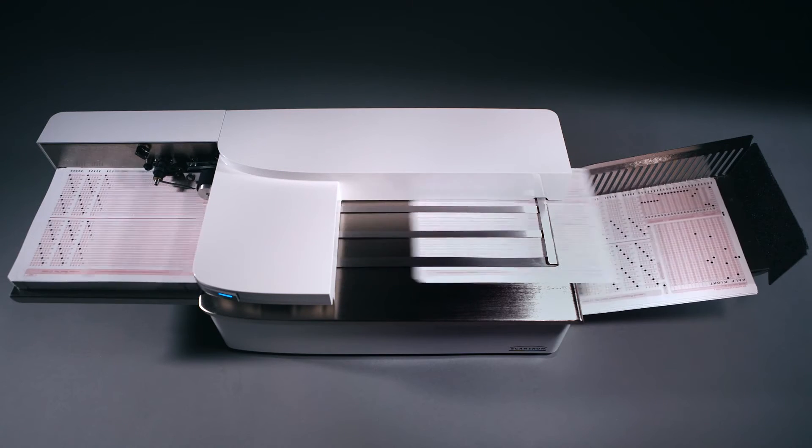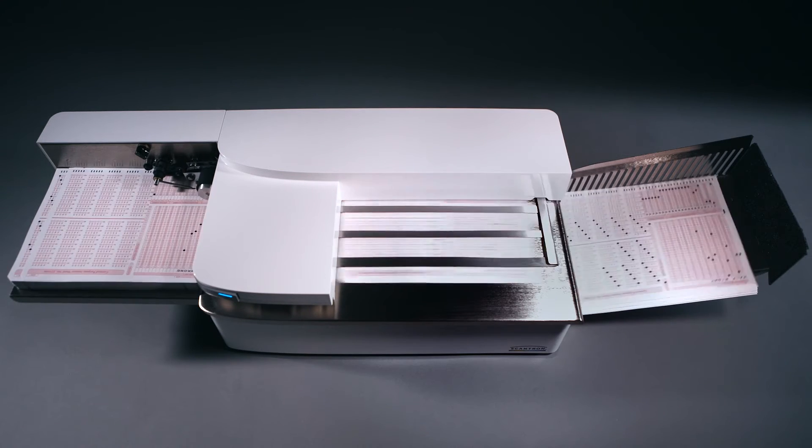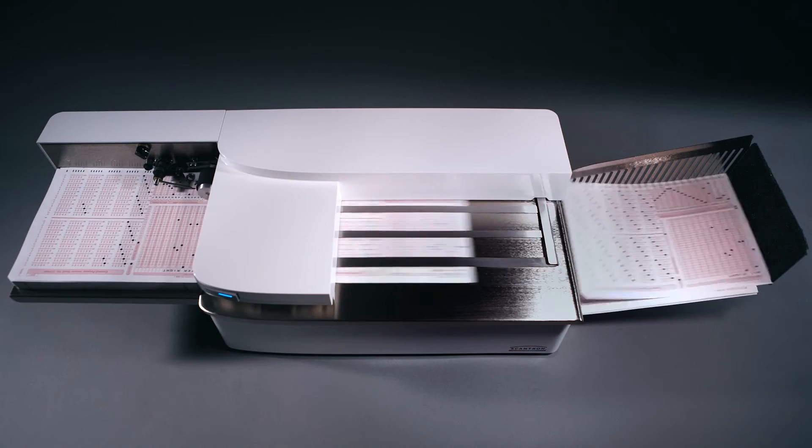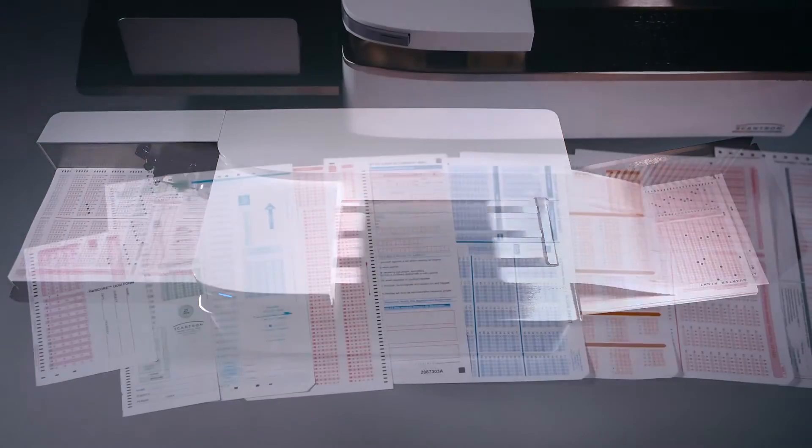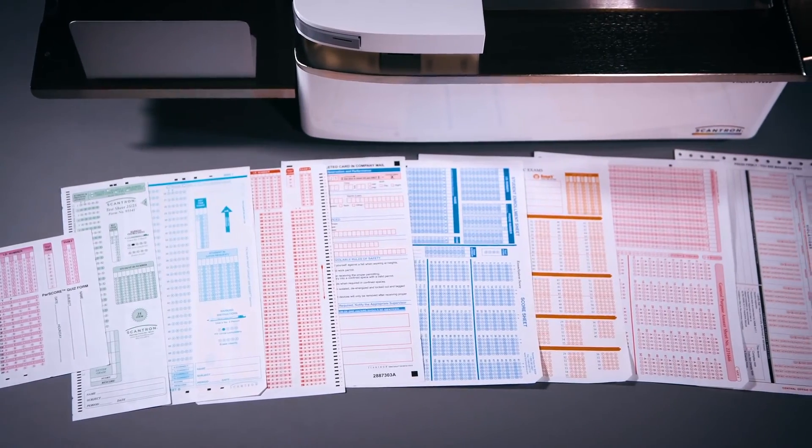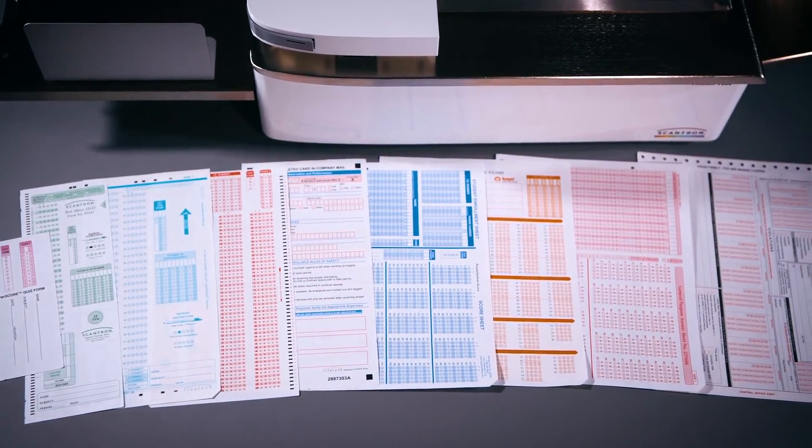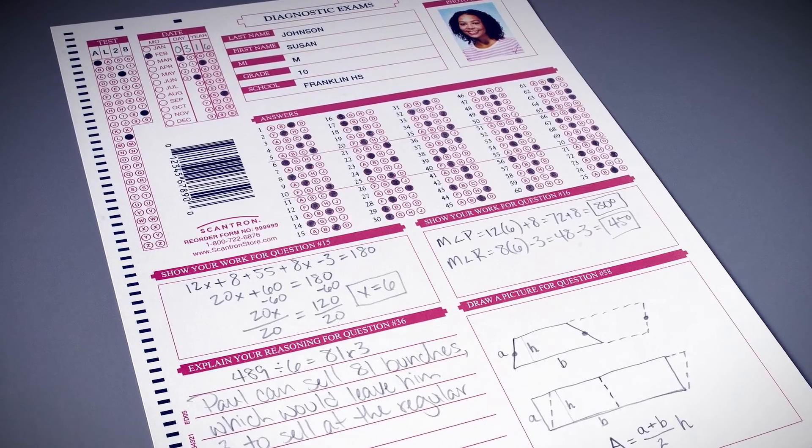Our image quality sentry continuously monitors scanning to ensure the most accurate results possible, virtually eliminating read problems from dust and debris. Supporting a wide variety of Scantron forms and document sizes, the Insight 700C is versatile and reliable.